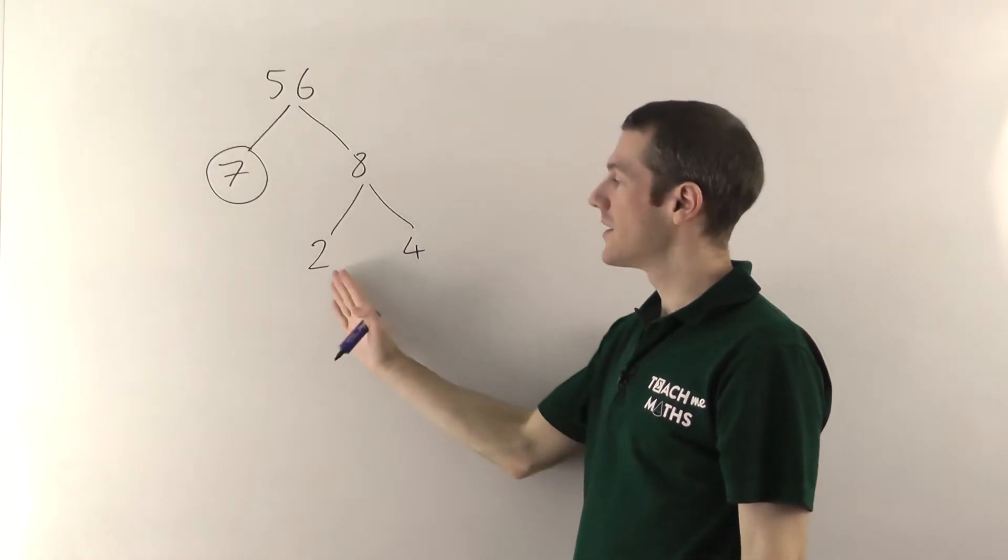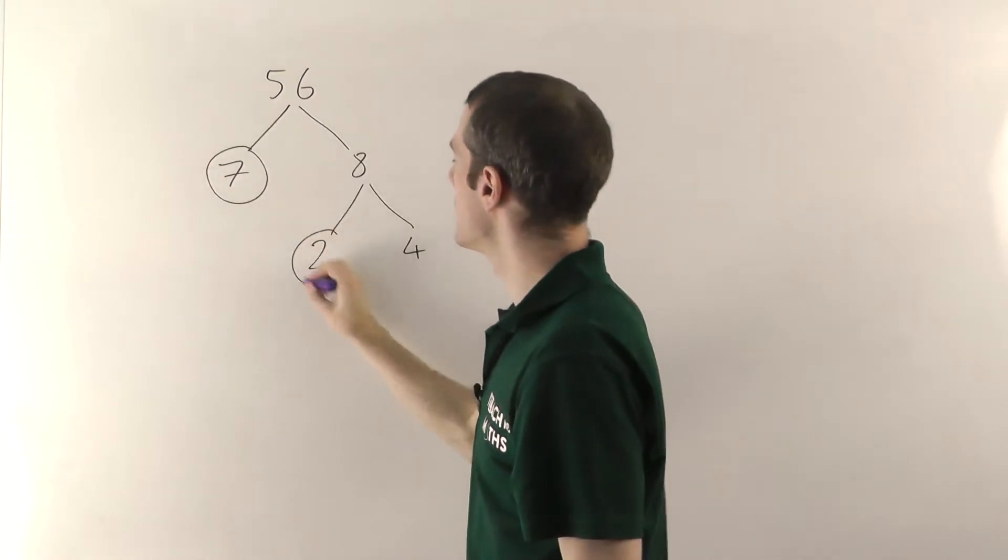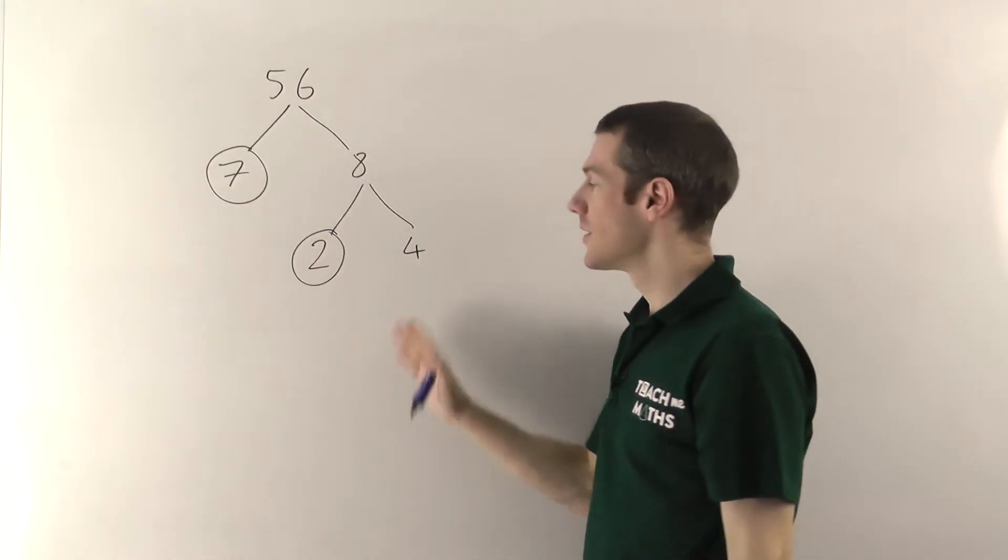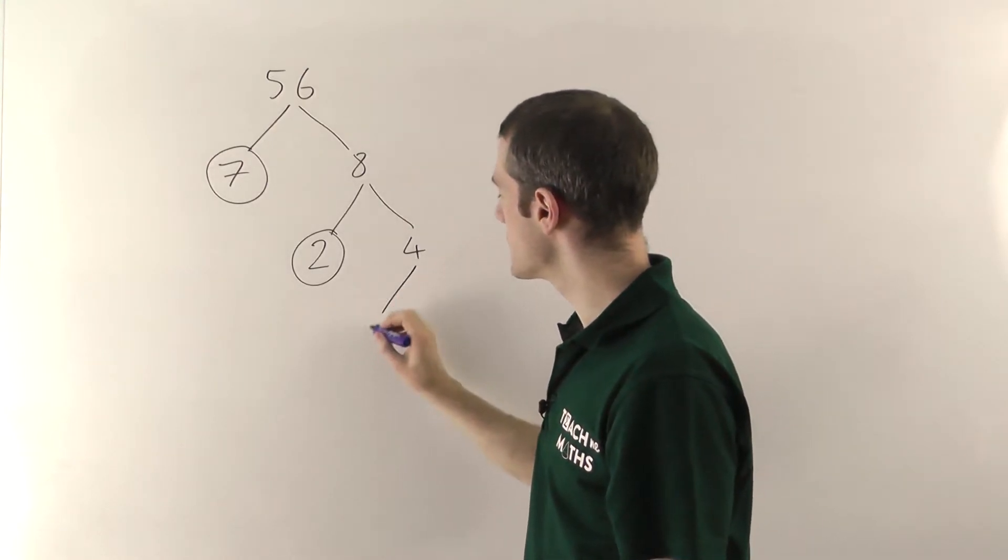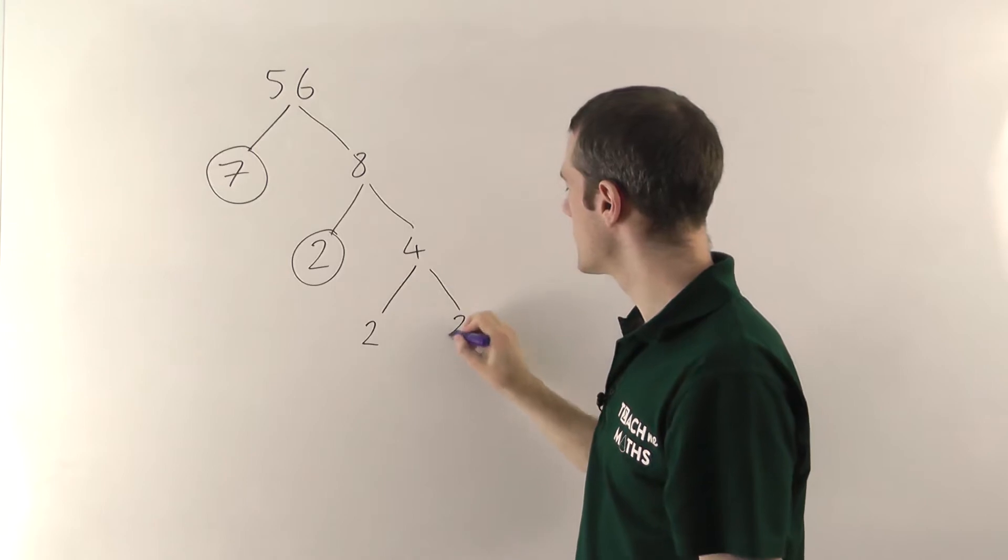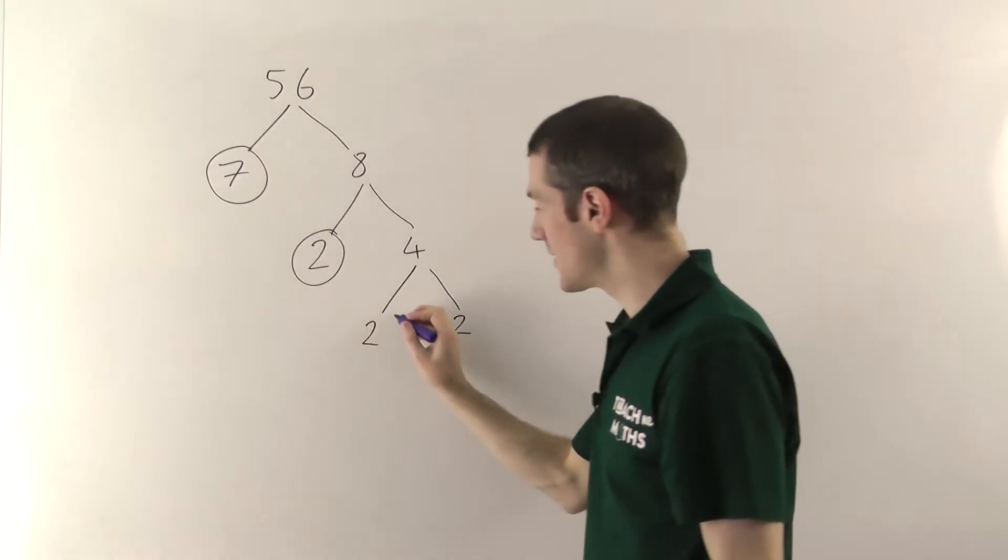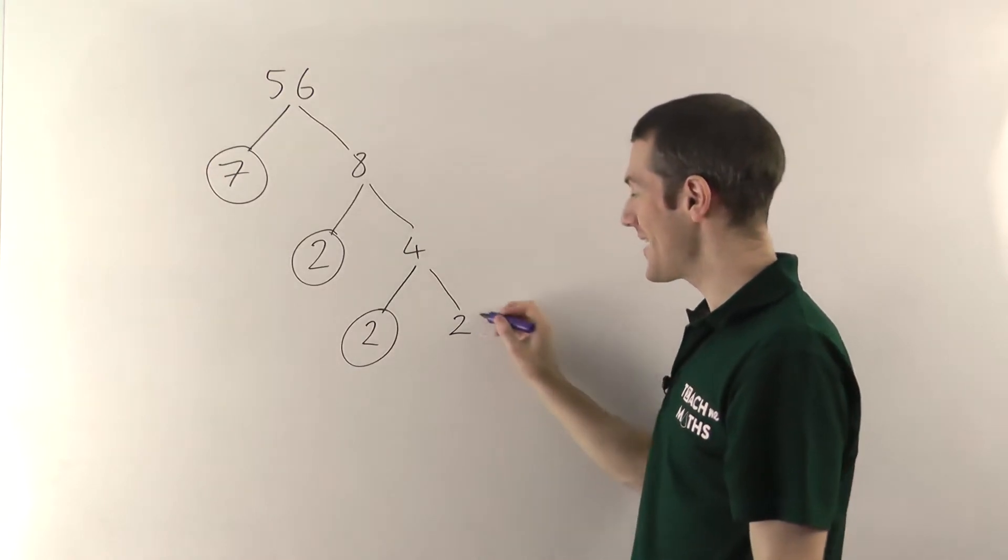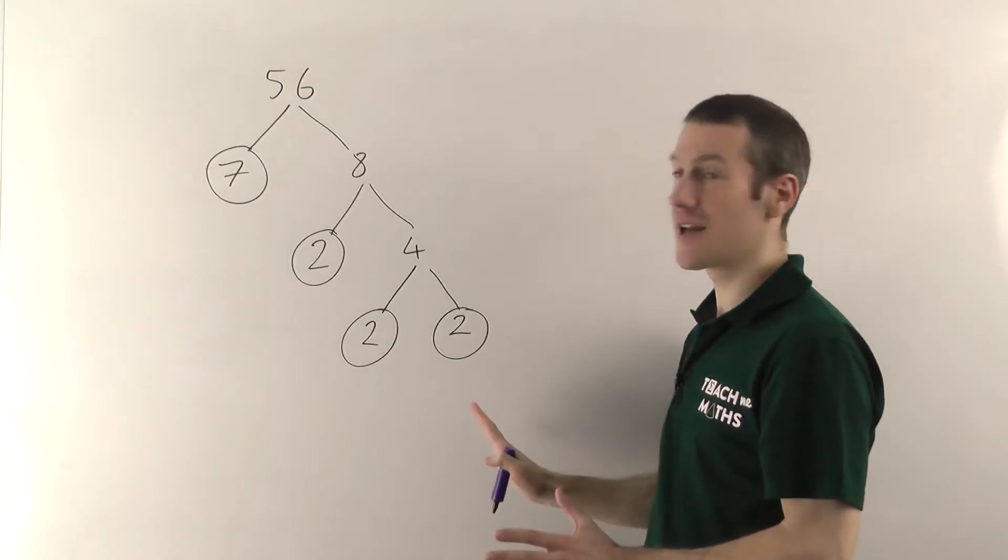And then ask yourself is 2 a prime number? Yes it is nothing else divides into 2. Is 4 a prime number? No. So we want to split this up again. Well 2 times 2 is 4 so you split this into 2 times 2. Is this a prime number? Well yes it's exactly the same as that. So 2 is still prime here and it's still prime over here. And once you've finished, once you can't branch out anymore, that's the end.